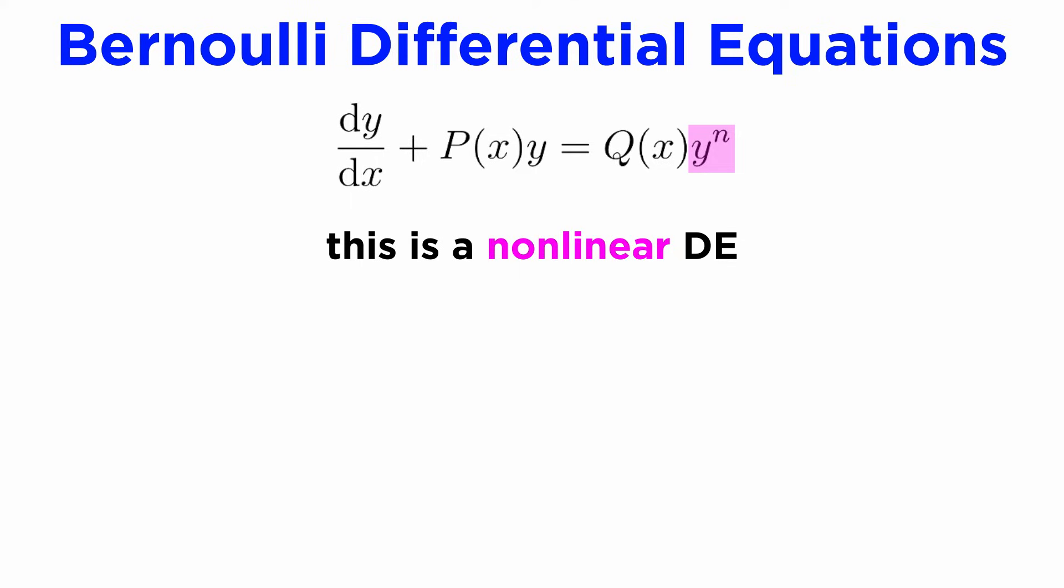You can see that this sort of looks like a linear DE, but with that extra multiple of y to the n on the right side, which makes it non-linear. The appropriate substitution for Bernoulli DEs is to let u equal y to the 1 minus n, which we'll show with an example.